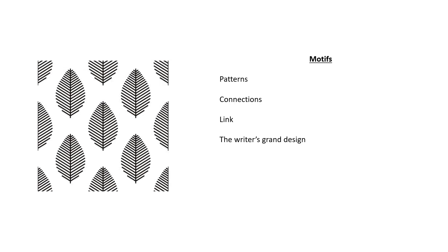A motif is a running image or pattern — think of it like wallpaper, something you see repeated again and again. It might be shown in different ways, but writers use motifs throughout their writing. In Christmas Carol, poetry, and Romeo and Juliet we can see a number of patterns. We're looking for connections that help us link across parts of the text, showing the examiner we understand the text in detail and can think about the writer's broader design.